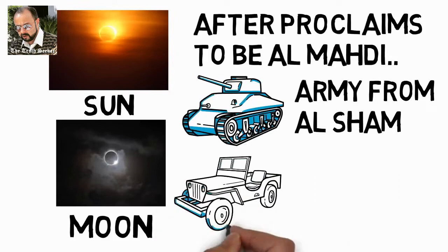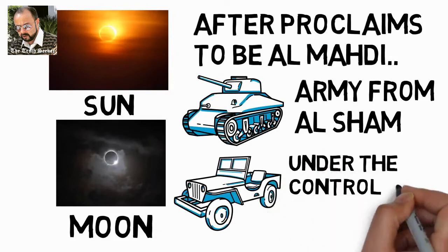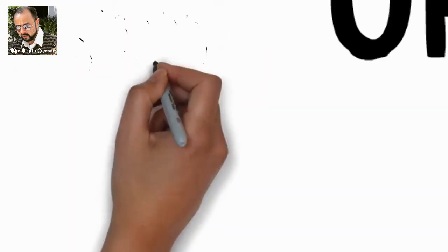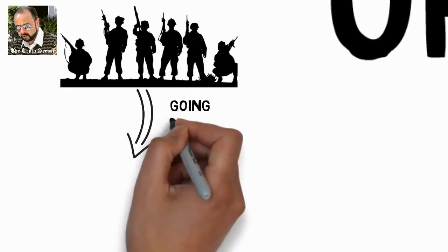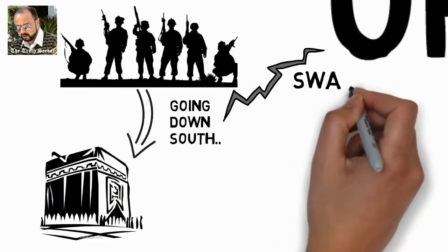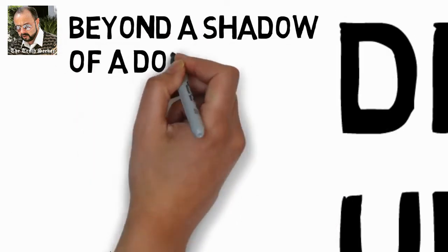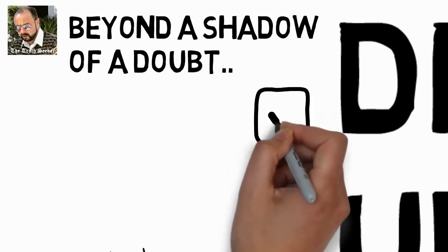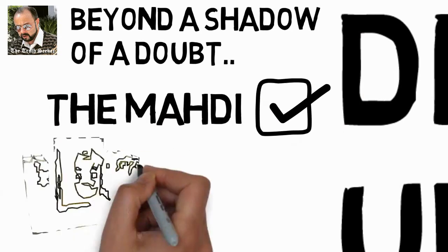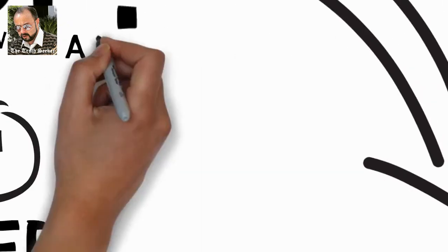That army comes down to the south, and armies are under the control of governments. And when an army is between Medina and Mecca going down south, the earth is going to open and swallow that army. That is the sign of all signs. Beyond the shadow of a doubt, validating the claim of this man that he is the Mahdi.